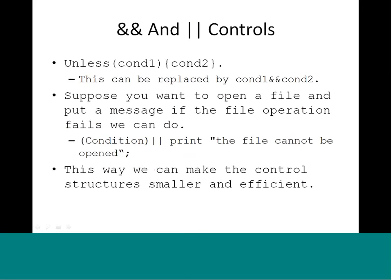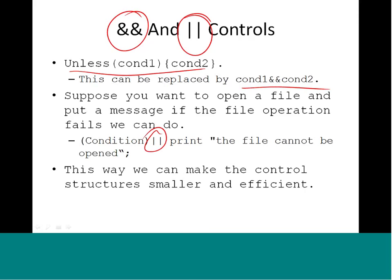The `&&` (and) and `||` (or) operators can also be used as control structures. For example, `unless condition1` followed by `condition2` can be replaced by `condition1 && condition2`. A common idiom is using `||` for file error handling — if you want to open a file and print an error message if the operation fails, you write `open(FILE, ...) || die 'file cannot be opened'`. Using this kind of shorthand makes the control structure smaller and more efficient.